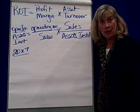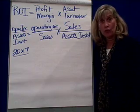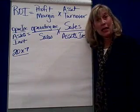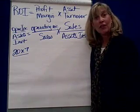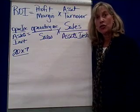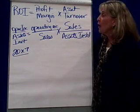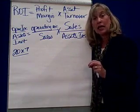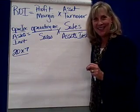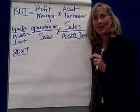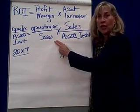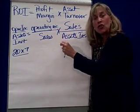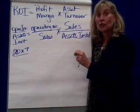When evaluating investment centers, one of the measures that can be used is return on investment. Return on investment is basically the operating income divided by the assets invested. It can also be broken down into two different measures. The first measure is the profit margin, which hones in on how well a manager is managing their income statement — revenues minus expenses. The profit margin gives you a percentage: operating income divided by sales, telling you how many cents of every sales dollar is profit.